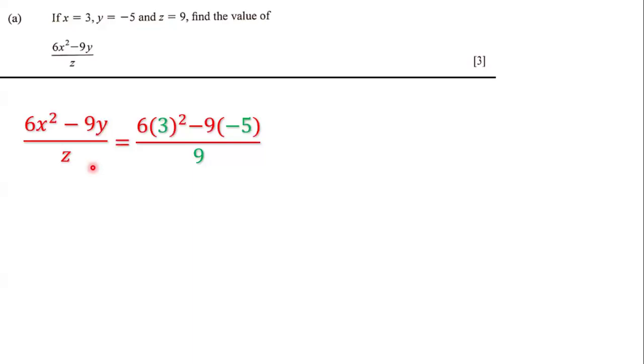Let's substitute. Here we have 3 in place of x, we have negative 5 in place of y, and we have 9 in place of z. So we have 6 multiplied by 3 squared minus 9 multiplied by negative 5 all over 9.